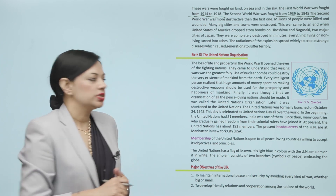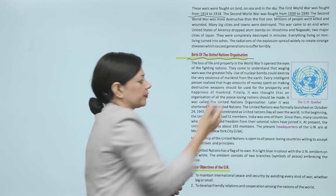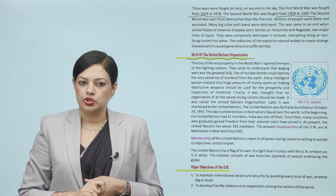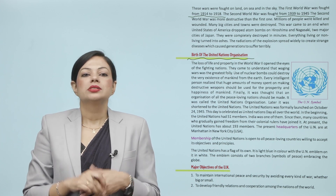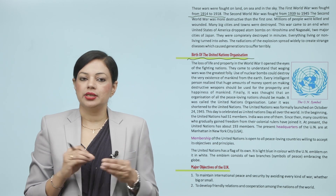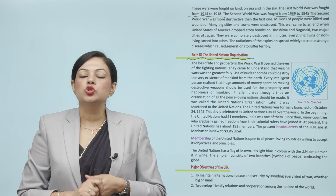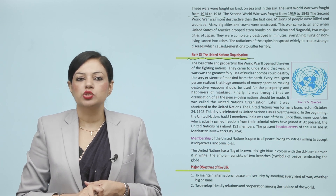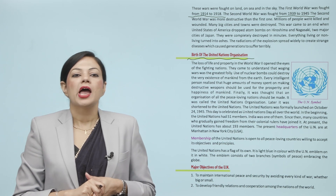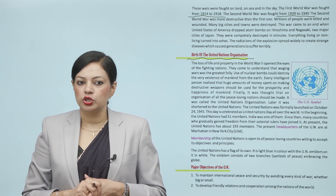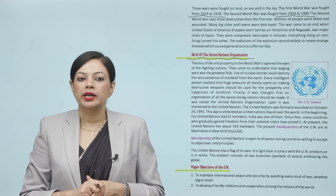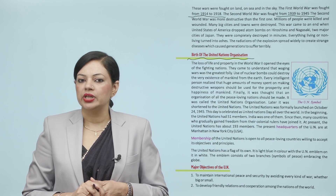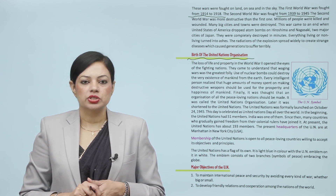Birth of the United Nations Organization. The loss of life and property in World War 2 opened the eyes of the fighting nations. They came to understand that waging wars was the greatest folly and use of nuclear bombs could destroy the very existence of mankind from the earth. Every intelligent person realized that huge amounts of money spent on making destructive weapons should be used for the prosperity and happiness of mankind. Finally, it was thought that an organization of all the peace-loving nations should be made, and it was called the United Nations Organization.